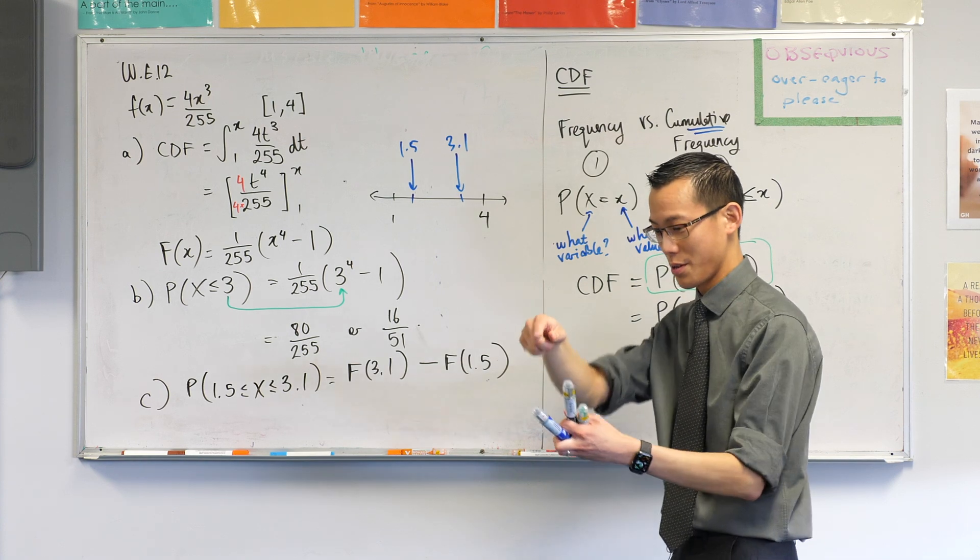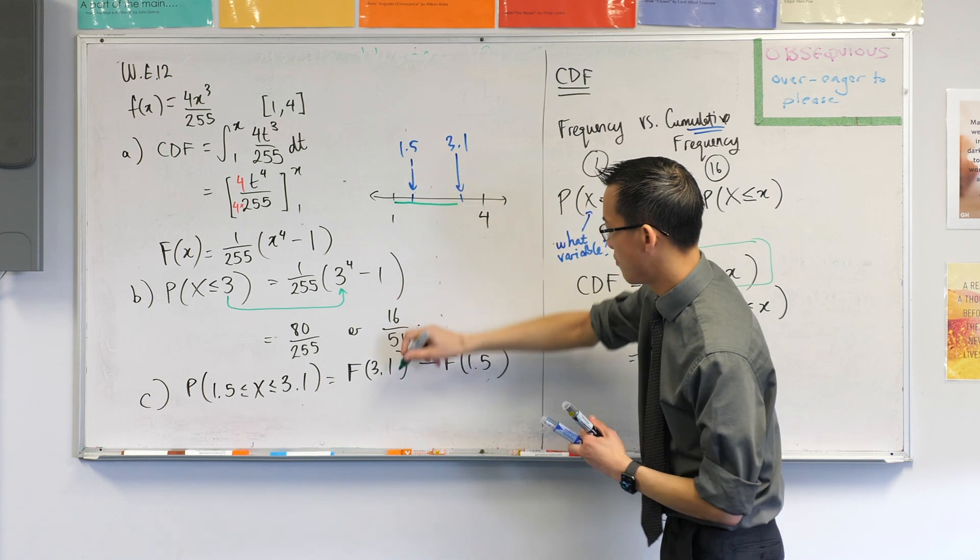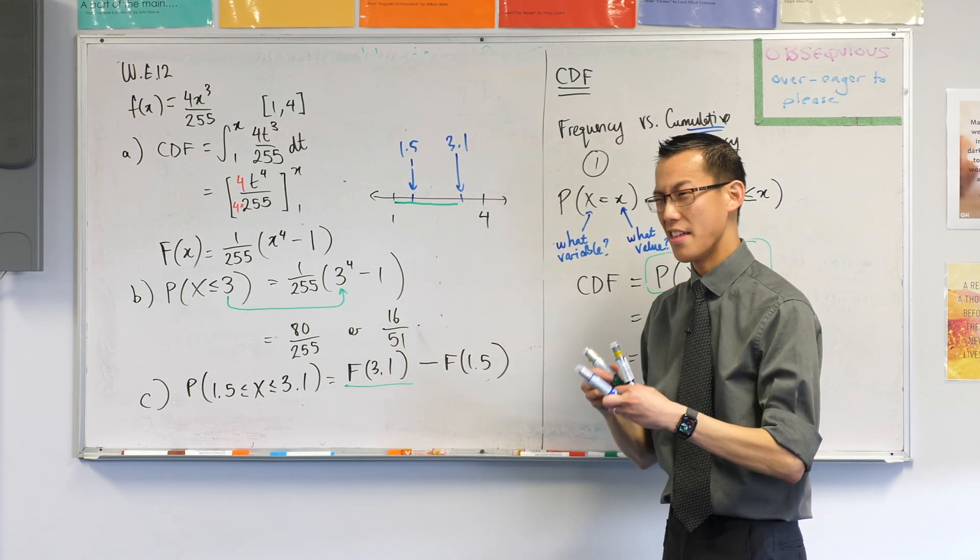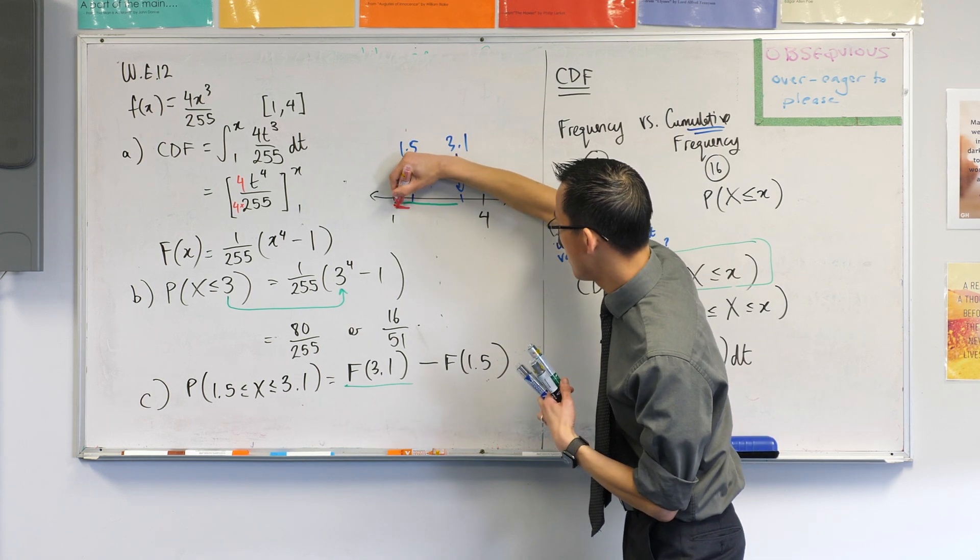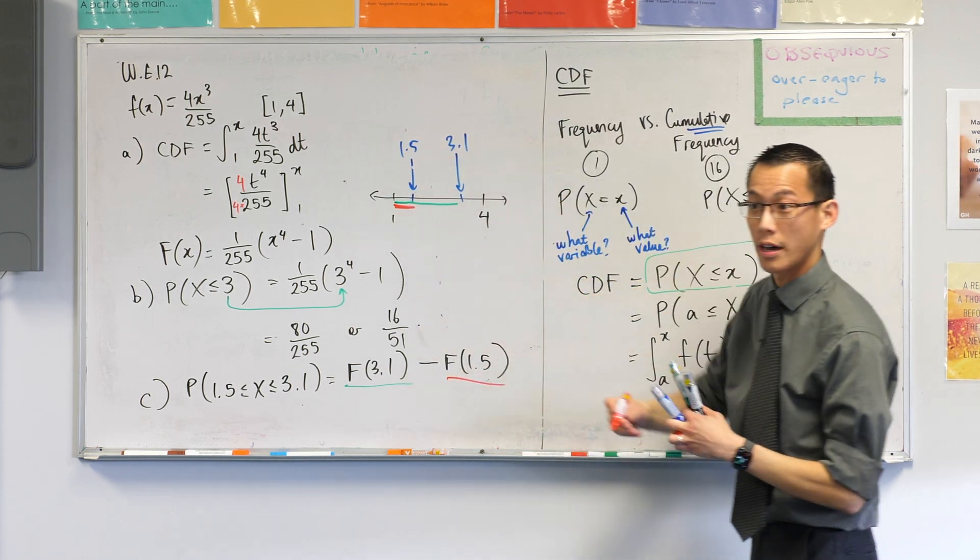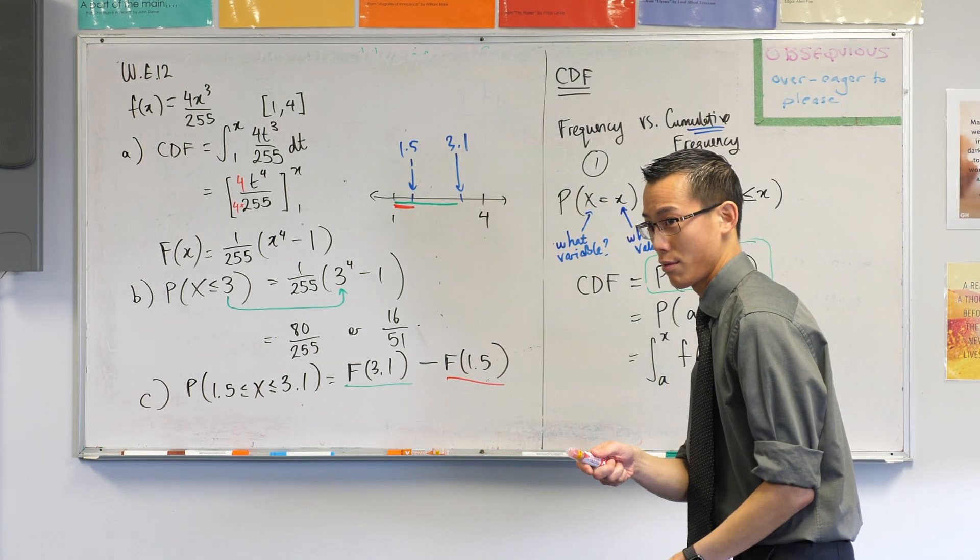If you want me to draw this out for you, here I am from 1 to 4. And the part that I'm really interested in is from 1.5 to 3.1 in this case. So what I'm going to do, I'll come to your question in a second, Mui. I'm going to work out this part. That's this guy here. And then I'm going to subtract this part, which is this guy here. Do you see what we're doing? You can go ahead and you can work out that value. Mui, did you still have a question?